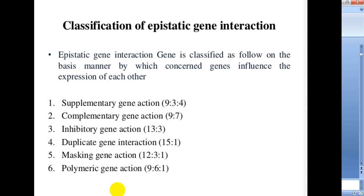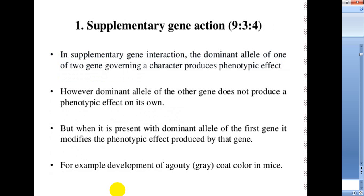The types of epistatic interaction include supplementary gene interaction, complementary gene action, inhibitory gene action, duplicate gene action, masking gene action, and polymeric gene action. Some people refer to supplementary gene action as recessive epistasis and inhibitory gene action as dominant epistasis.